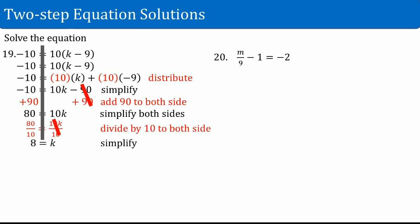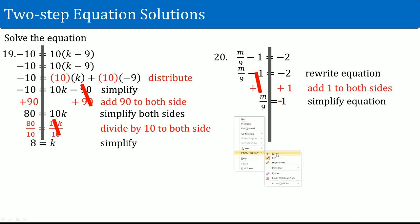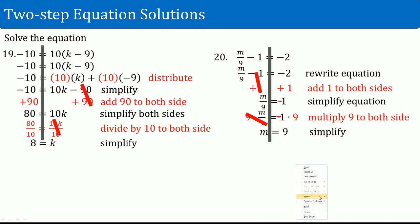Number twenty: m divided by 9 minus 1 equals negative 2. Rewrite the equation and draw the line straight down. What is attached to the variable: a divide by 9 and a subtract 1. Deal with the outermost thing, the subtract 1 — add 1 to both sides. That cancels. On the left-hand side you have m divided by 9. On the right-hand side, negative 2 plus 1 becomes negative 1. Now multiply by 9 on both sides. That cancels out. What is left on the left-hand side is just m. On the right-hand side, it should be negative 9.